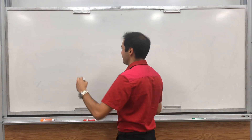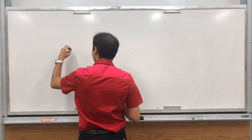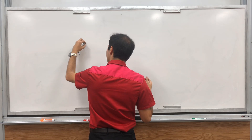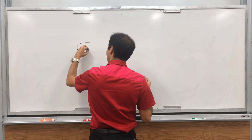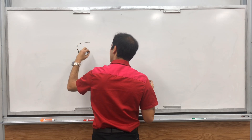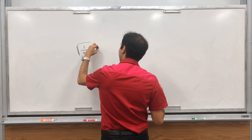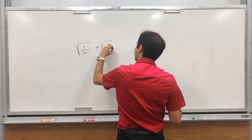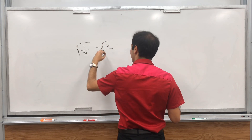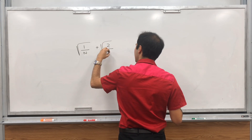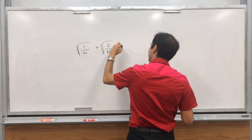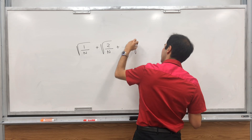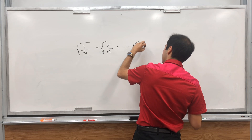You may or may not have seen this. Consider, for fixed n, the following sum: 1 over square root of n, plus square root of 2 over n, plus dot dot dot, plus square root of n over n.